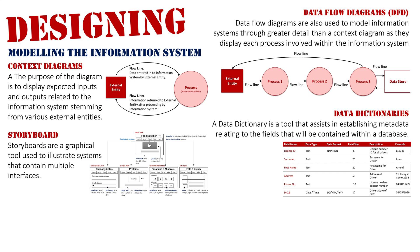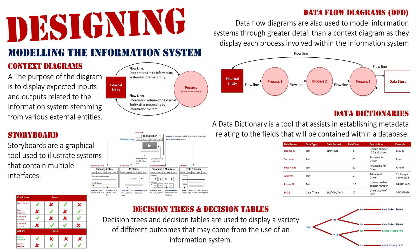The final category covers two linked diagrams: decision trees and decision tables. The purpose of both is to display the variety of different outcomes that can come from the use of an information system, as different pathways and types of data entered may lead to different results. The decision tree presents this as a diagram with lines leading down different pathways, while the decision table uses a tabular format with ticks and crosses showing which rules are satisfied and what actions result.